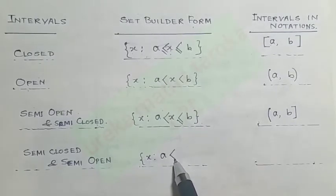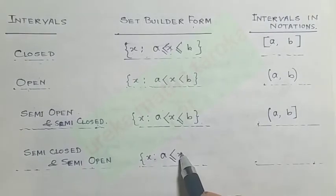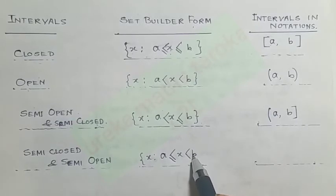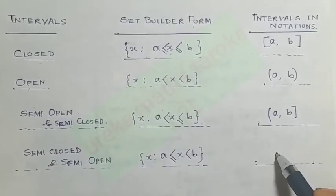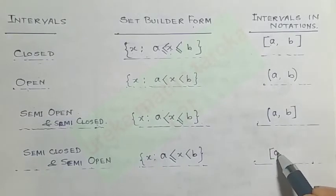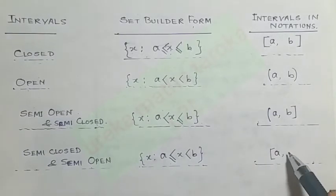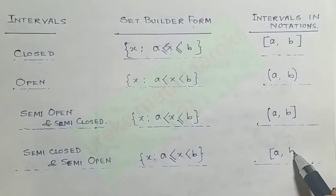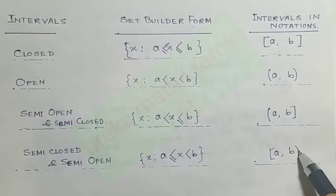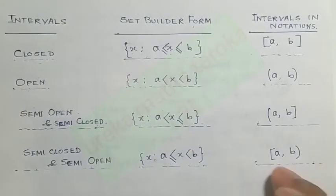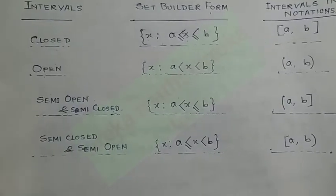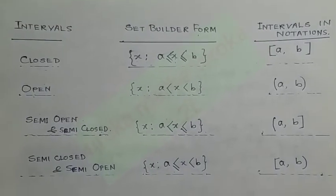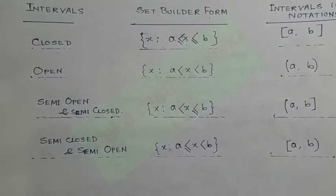The closed side uses the less than or equal to symbol. If a is included, we use an equality sign. The equality sign indicates that the endpoint is included.